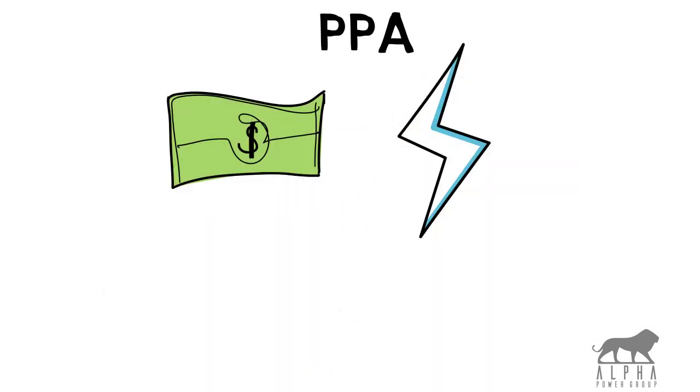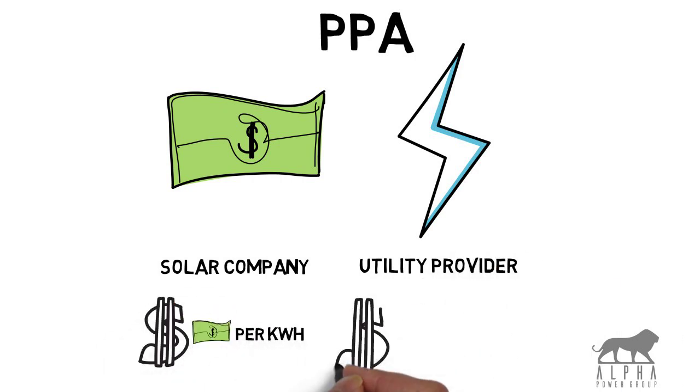A Power Purchase Agreement, or PPA, is where you continue to purchase power, but at a rate cheaper than the utility company and with less than the average annual rate increase.